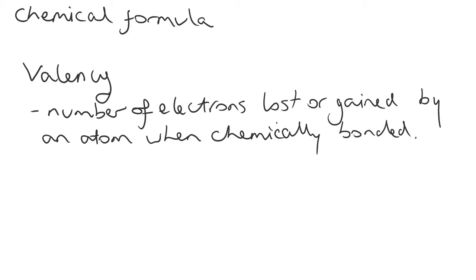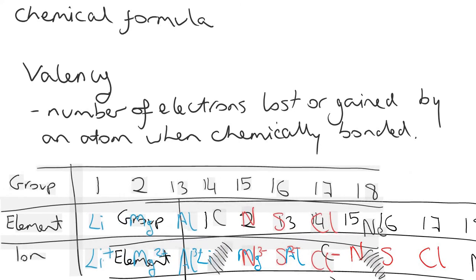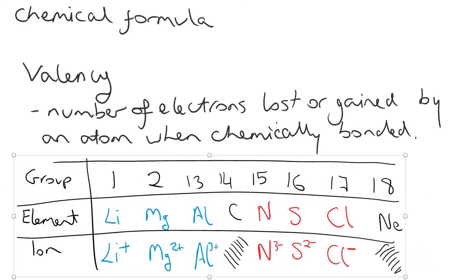So we're going to look at a table that I drew up previously. What this table shows is it shows us according to each group number. So this is group number 1, 2, 13 or 3, 4, 5, 6, 7, or 8 in the periodic table.